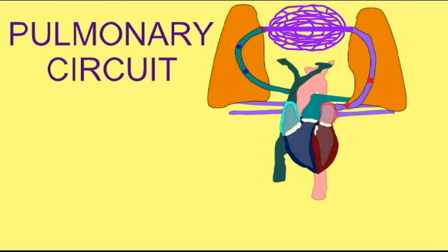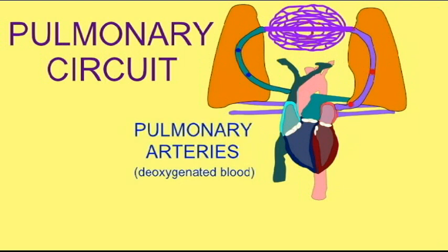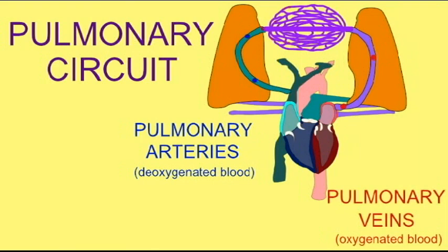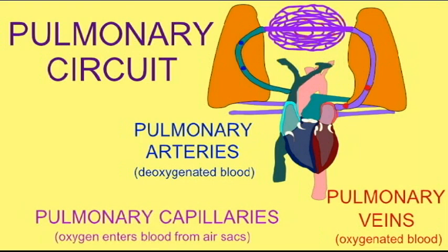The right ventricle is the pump of the pulmonary circuit. In the pulmonary circuit, deoxygenated blood travels from the right ventricle through the pulmonary trunk, through the pulmonary arteries, to get to the pulmonary capillaries in the lungs.